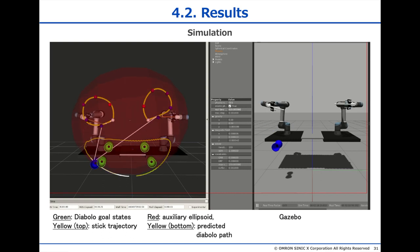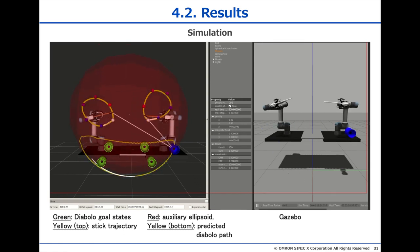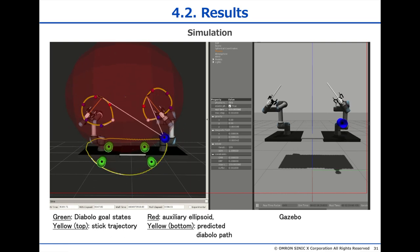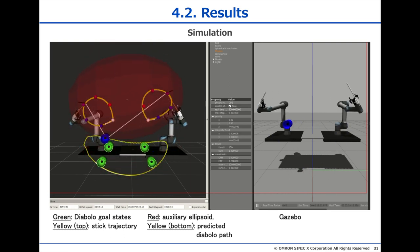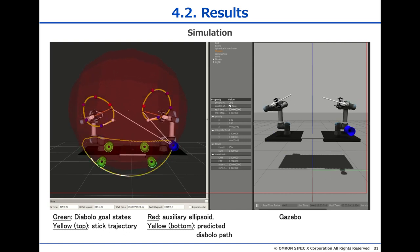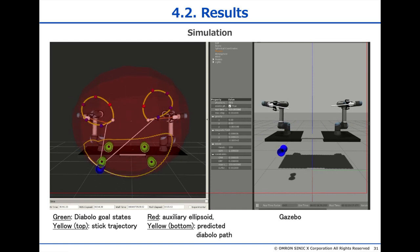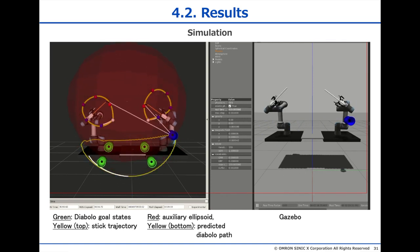When we put everything together, it looks like this. On the right hand side you see the physical simulation, and on the left side you see what's going on inside the system. The green Diabolos are the goal states. The red ball is the ellipsoid, and the blue Diabolo is the actual Diabolo that the robots are playing with. The yellow lines on the bottom are the predicted path of the Diabolo, and the ones on the top are the stick trajectories. You can see those changing with each cycle of the trajectory, because they are recalculated. The system can keep this cycle going pretty much indefinitely in simulation.